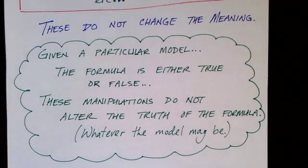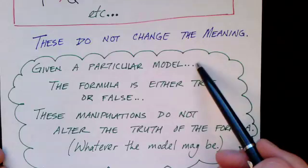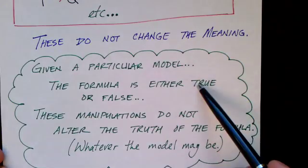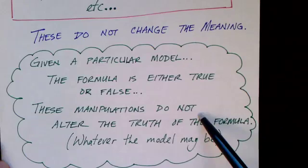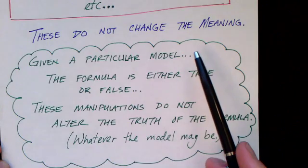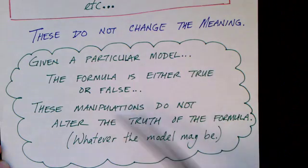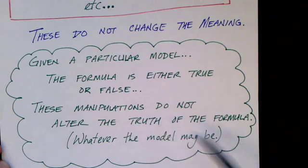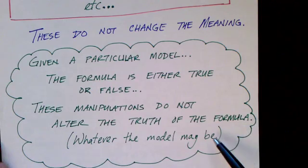The key thing is these manipulations don't change the meaning of the formulas. Given a particular model — that is, a universe of objects and a meaning for the relation symbols — a formula is either true or it's not true. These manipulations don't alter the truth of the formula. We don't need to know what the model is; we know these algebraic manipulations are valid for all models. They do not change the truth of the formula. True formulas stay true and false formulas stay false, regardless of the model.